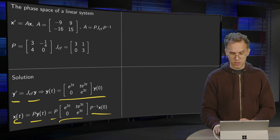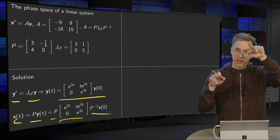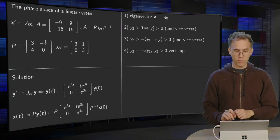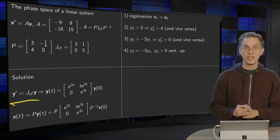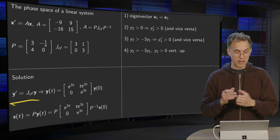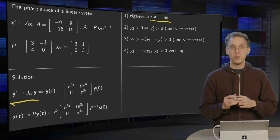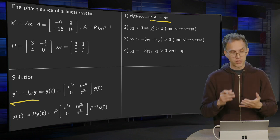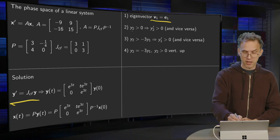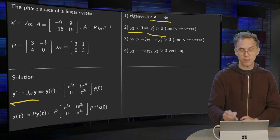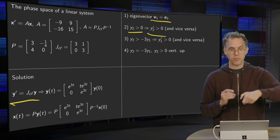Now we are going to draw the phase space, first for Y1 and Y2, and then for X1 and X2. Looking at the problem Y prime equals JCF times Y, we have one eigenvector in this case: V1 equals E1. Now we look at the signs of Y1 prime and Y2 prime. Y2 prime equals 3 times Y2, so if Y2 is positive, Y2 prime is always positive — if we are above, we are always going up; if we are below, we are always going down.